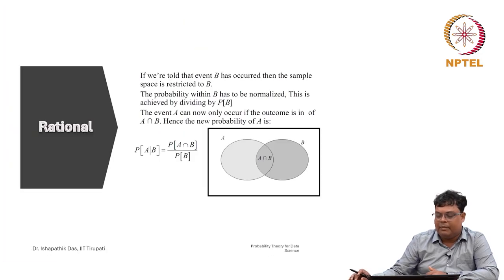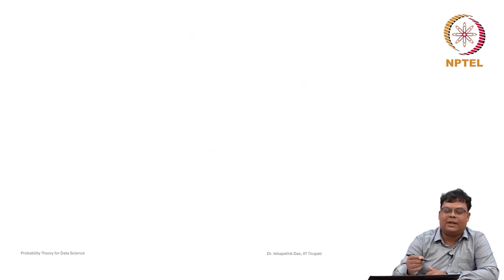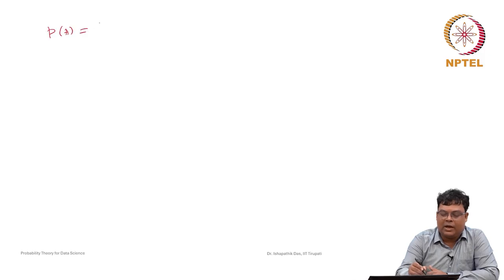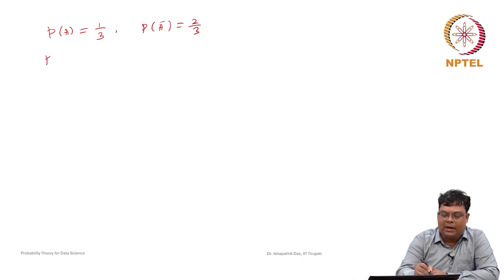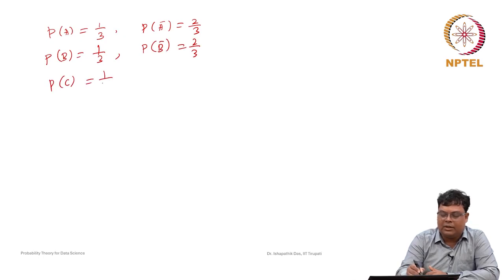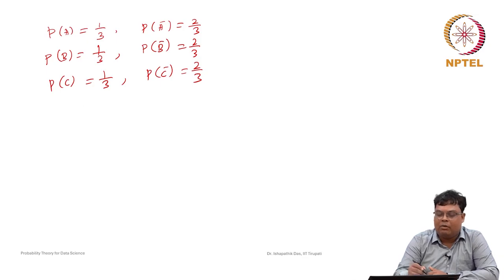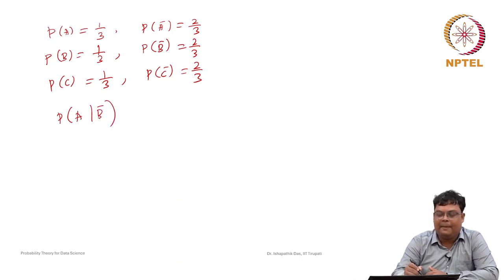Now we will discuss the prisoner dilemma. A, B and C are in jail and one will be executed. The probability that A will be executed is 1/3, probability of B complement is 2/3. Suppose the guard says that B will not be executed. What is the conditional probability of A given B complement?